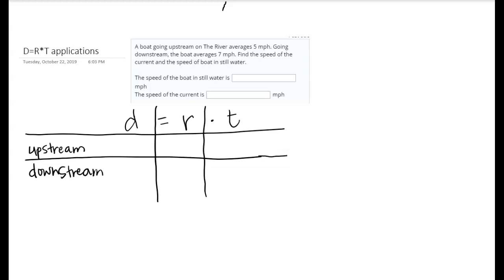Okay, we're going to work through a problem that deals with the formula distance equals rate times time. It's one of these problems where there's a boat going up a river and down a river. It says a boat going upstream on the river averages five miles per hour.